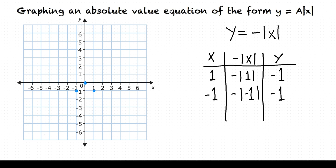Let's plot both of these points and then draw lines from the vertex to each of those points to create our graph. When x equals 1, y equals negative 1, and when x equals negative 1, y equals negative 1. From our vertex, we can draw a line through each of these points to see what our final graph looks like. So to graph an absolute value function: first plot the vertex, then plot a point on either side, and then draw lines connecting the vertex to both of those points.